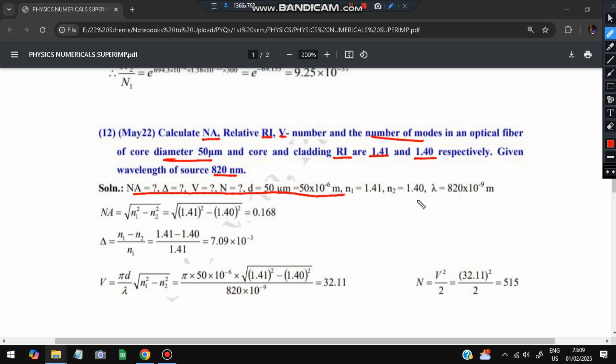Then we'll be applying the formula for NA. The NA formula is √(n₁² - n₂²). The two n values are 1.41 and 1.40, giving 0.168. Delta is nothing but the relative refractive index, which is (n₁ - n₂)/n₁. The V number's formula is πd/λ × √(n₁² - n₂²), which is NA.